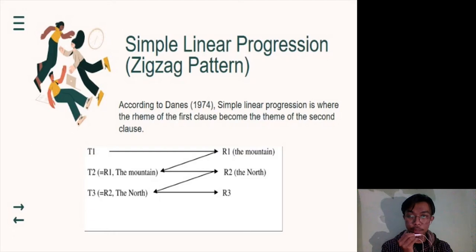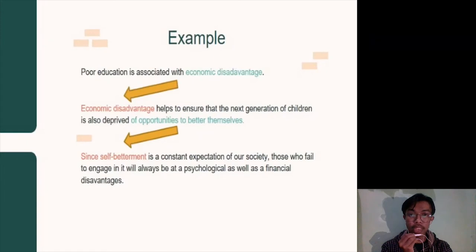According to the definition, the first rheme here will become a second theme here because the first theme is here. And this rule also same with the following example below. So, let's see the example here. This is the example.